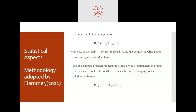For calculating the normal return, there are many established models you will encounter in securities analysis and portfolio management, such as the single index model, Capital Asset Pricing Model, Fama-French three-factor model, and Fama-French five-factor model. For better understanding, I'm using the single index model as adopted in the Flammer paper.